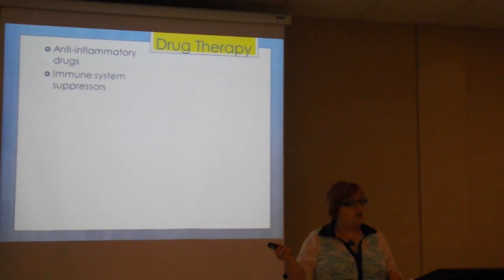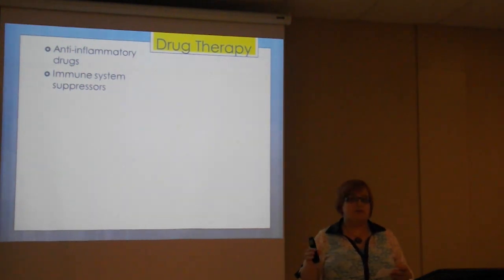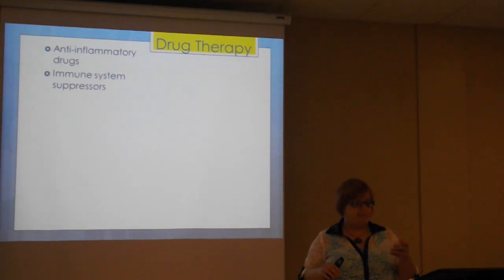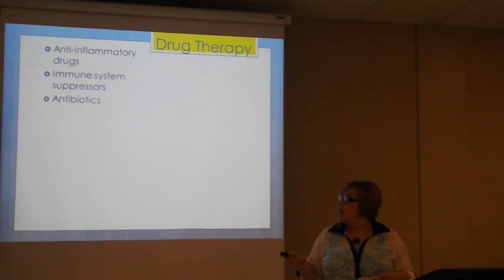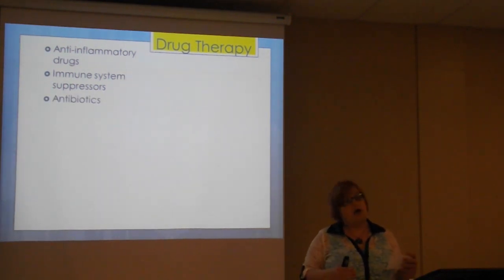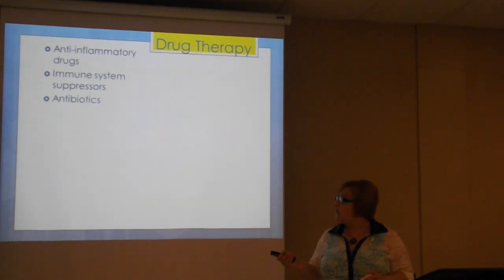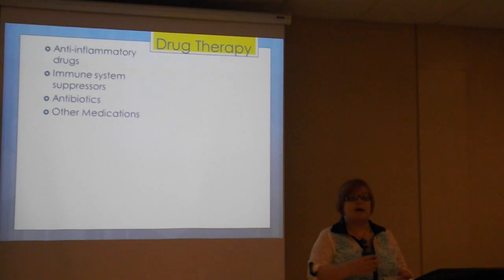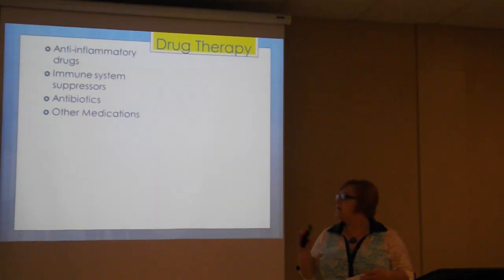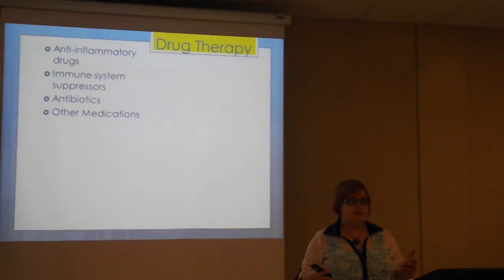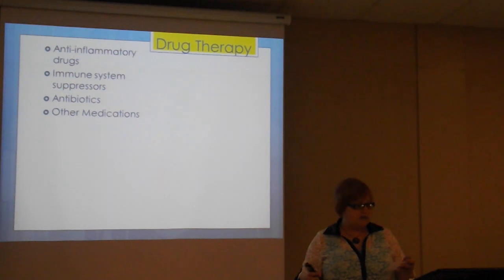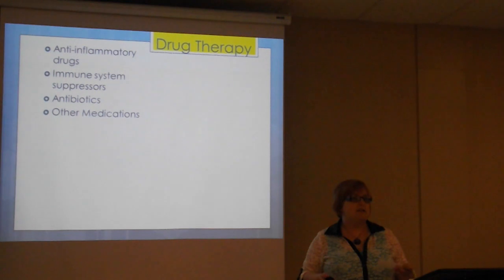Immune system suppressors are another step, directly affecting the immune system rather than attacking the inflammation itself, and hopefully taking down swelling as well. Other medications include antibiotics to treat complications and help bring the disease into remission, plus medications to treat signs and symptoms such as anti-diarrheals, laxatives for small bowel obstructions, pain relievers, and iron supplements and vitamins since patients can't absorb everything they need.